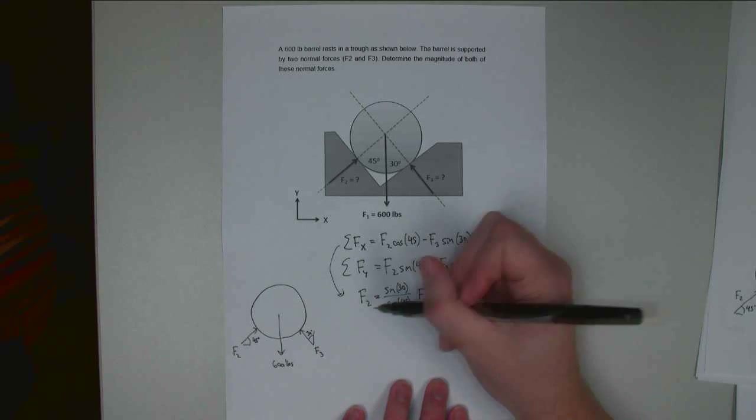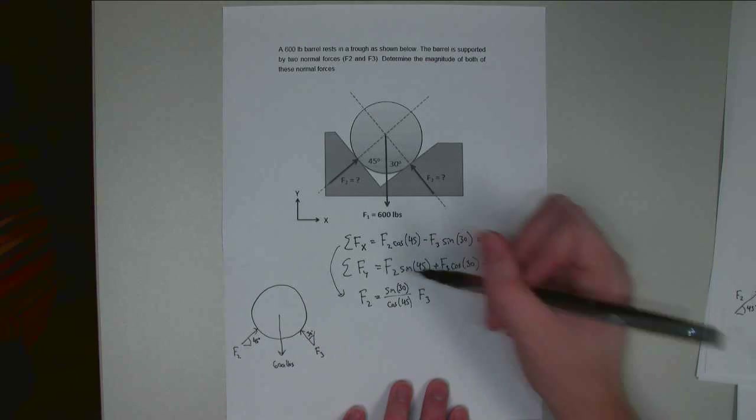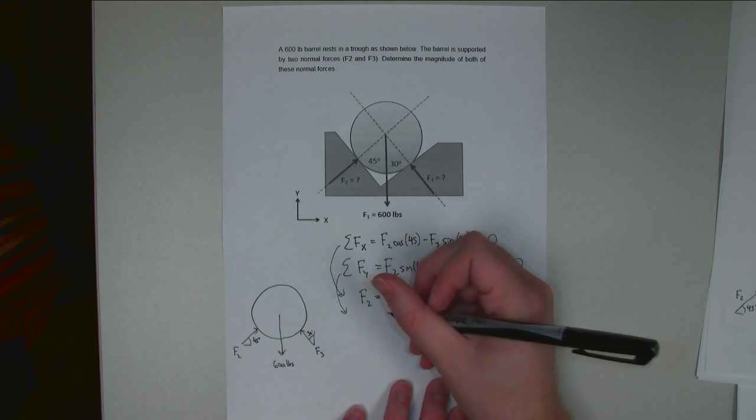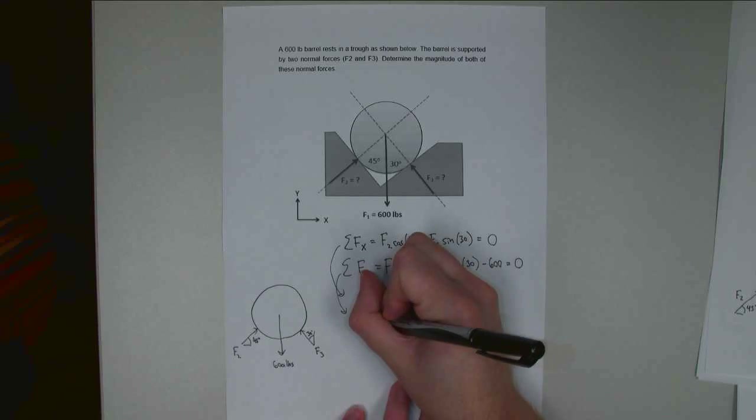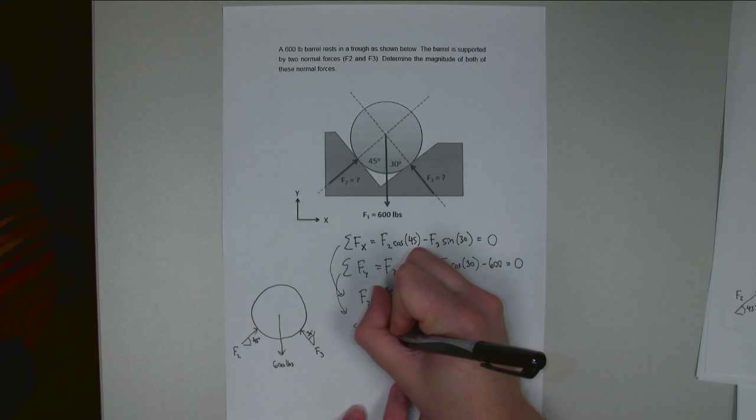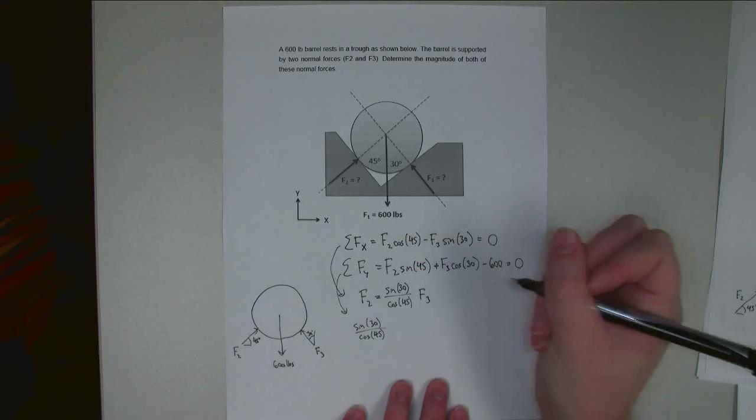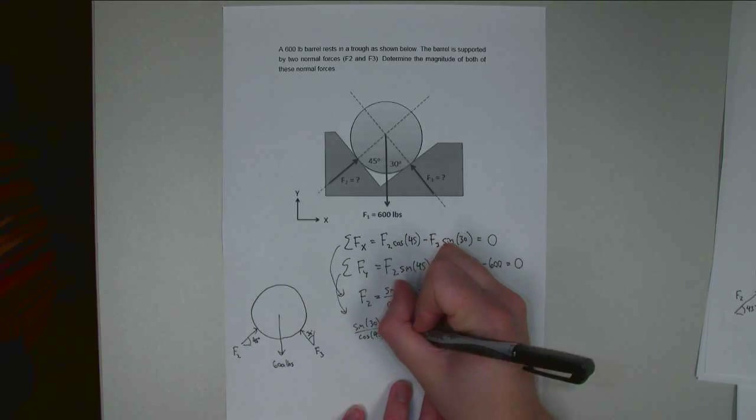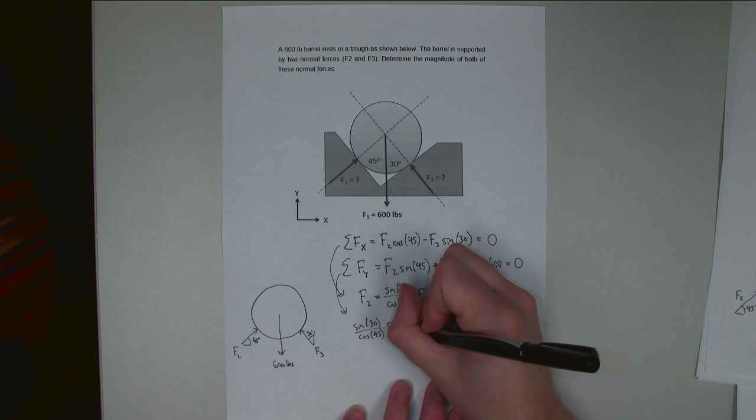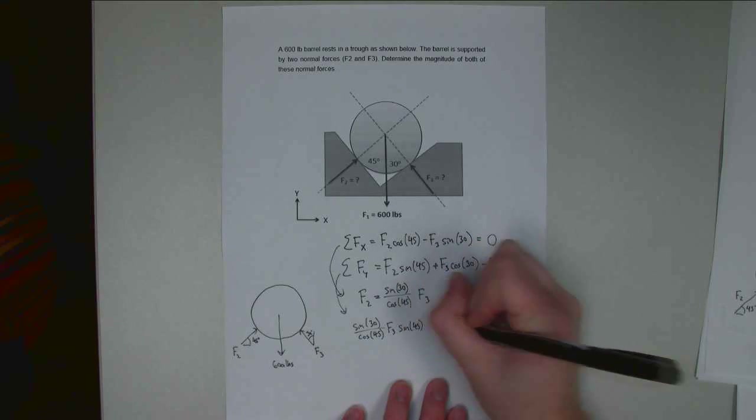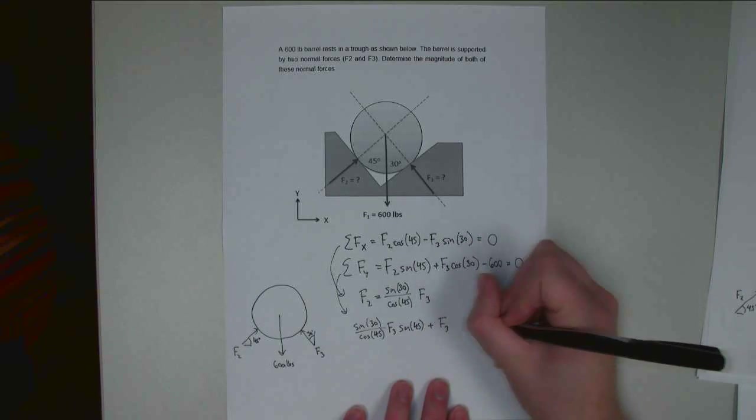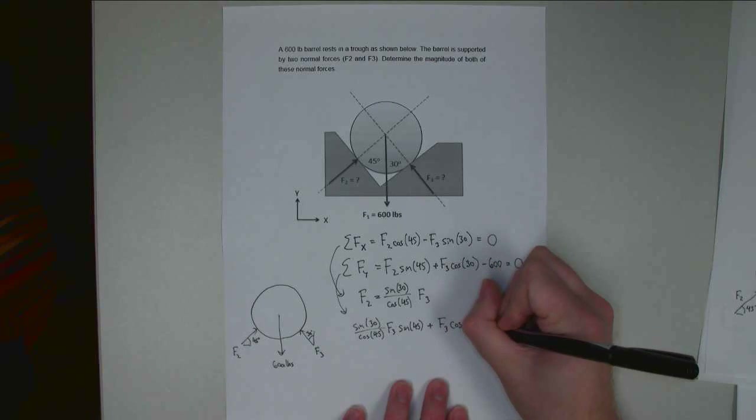Alright, so now I can substitute this value for F2 into the second equation. So I'm going to use that second equation. I'm going to have F2 is going to be sine 30 over cosine 45 times F3, and that whole thing gets multiplied by sine 45. Careful not to forget that.